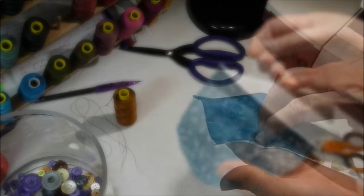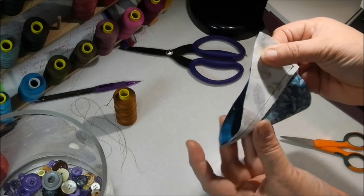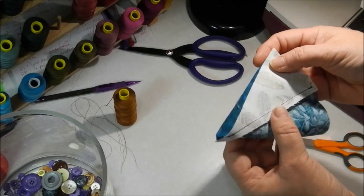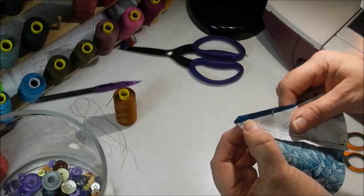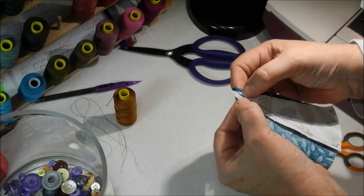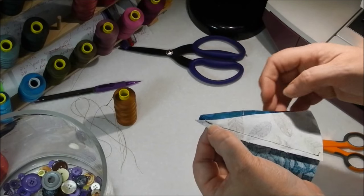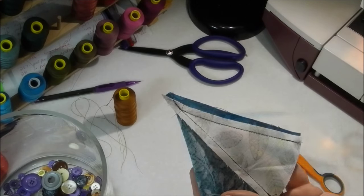There it is pressed open. I pressed the seam over to one side. Now I'm going to put it right sides together to the other side and sew another seam. I'm going to follow the center piece instead of the back piece. We can trim that off.